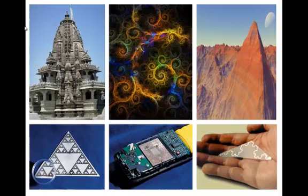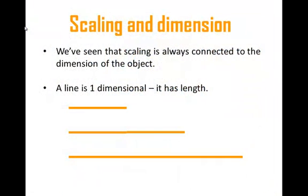One of the cool properties about a fractal, in addition to its overwhelmingly strange shape, is that fractals are not one dimensional or two dimensional objects — they live somewhere in between. To see why that's the case, let's take a look at scaling and dimension.